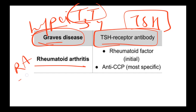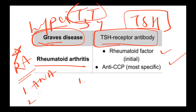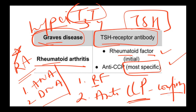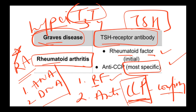Rheumatoid arthritis has two key antibodies. Similar to SLE where ANA is first and anti-dsDNA is second, here the first and most sensitive initial test is rheumatoid factor, and the second confirmatory test is anti-CCP. If rheumatoid factor is negative, the patient does not have rheumatoid arthritis. Anti-CCP is the most specific test to confirm the diagnosis.